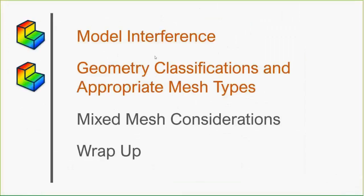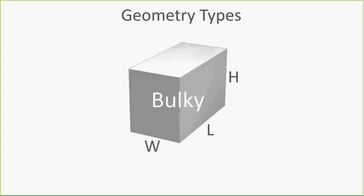Let's look at geometry classifications and appropriate mesh types. There are multiple different ways of creating geometry inside SOLIDWORKS — sweeps, lofts, sheet metal, weldments. Simulation looks at all of that geometry and classifies it under three main categories. The first is bulky: solid geometry where the length, width, and height are very similar in size — for example, length four inches, height five inches, width eight inches.